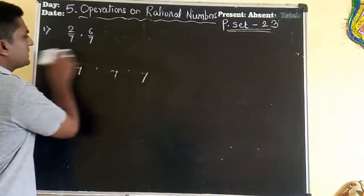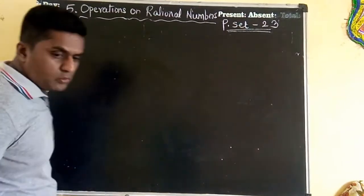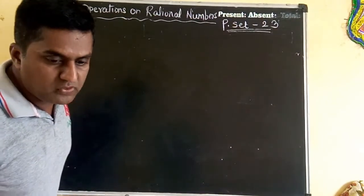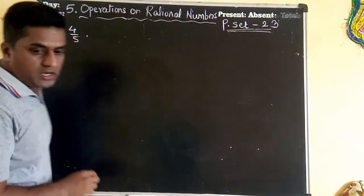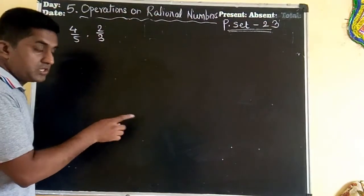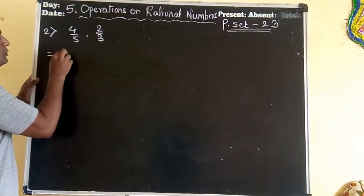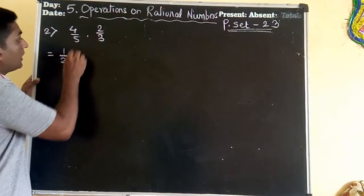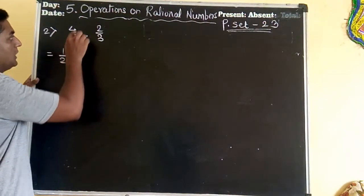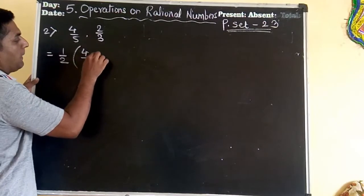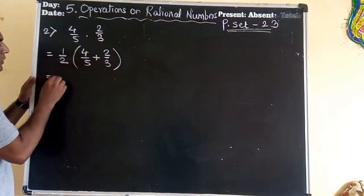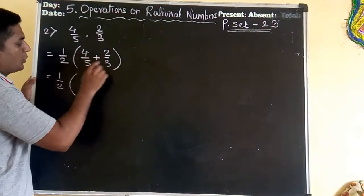Let us continue with question number 2. Question number 2 is 4 upon 5 and 2 upon 3. Here we can't use the first method. The method is a little bit different — you have to use half, that is 1 upon 2, compulsorily. It is the procedure of sum multiplied by 1 upon 2. So use: 1 upon 2 multiplied by (4 upon 5 plus 2 upon 3).